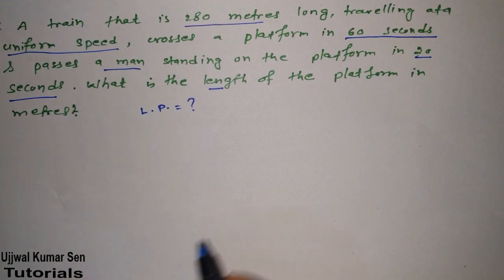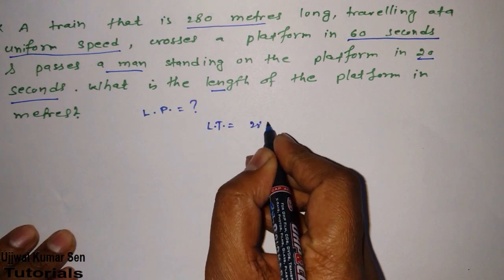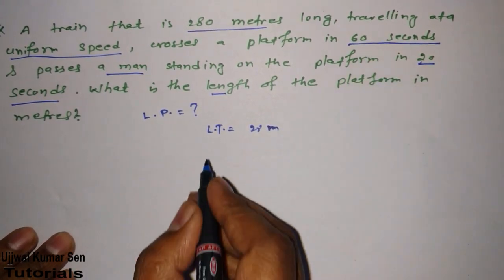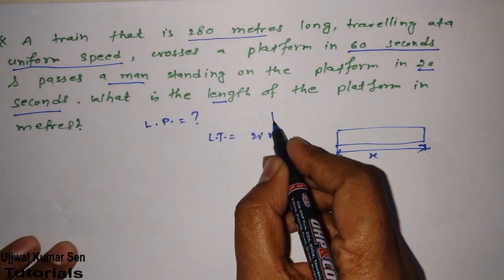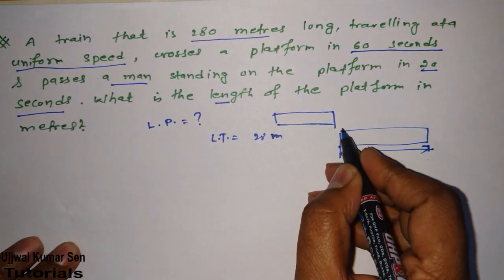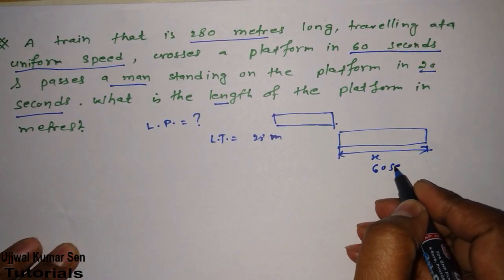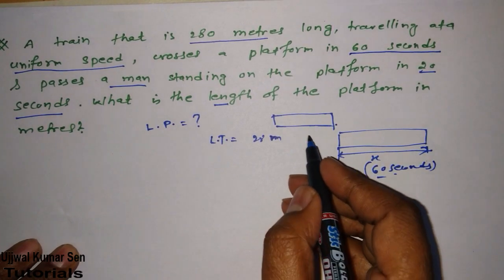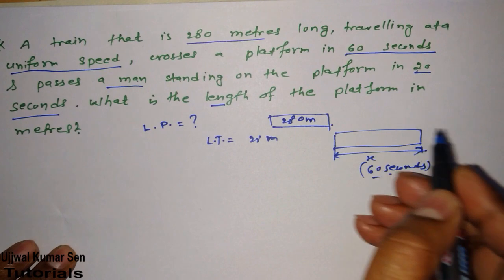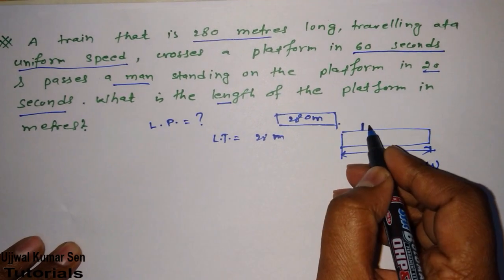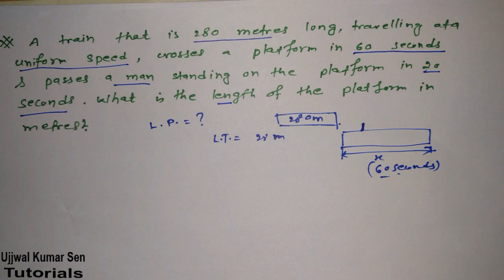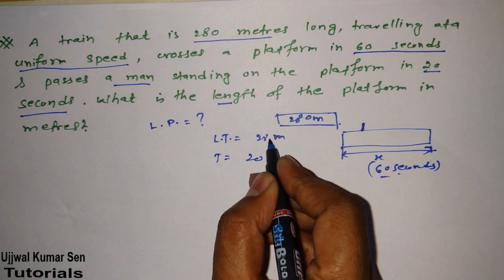The length of the train is 280 meters. The train crosses a platform — suppose this is the platform and we have to find its length. A person is standing on the platform and the train is crossing that person. We are not considering the length of the person in this problem. The time for that crossing is 20 seconds.